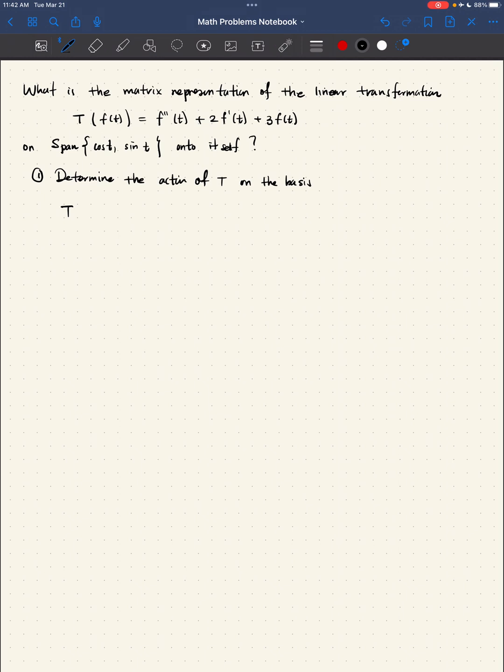So let's compute. We have T of cosine of T. And what will be that? Well, that's the second derivative of the cosine plus two times the first derivative of the cosine plus three times the cosine of T.